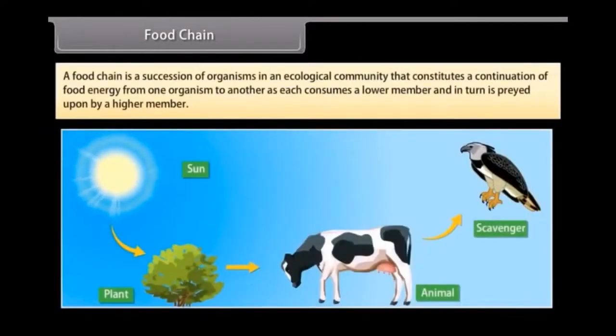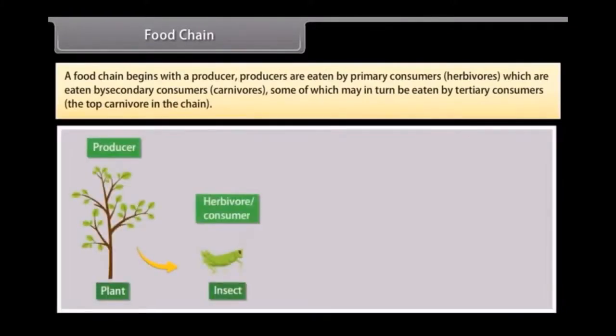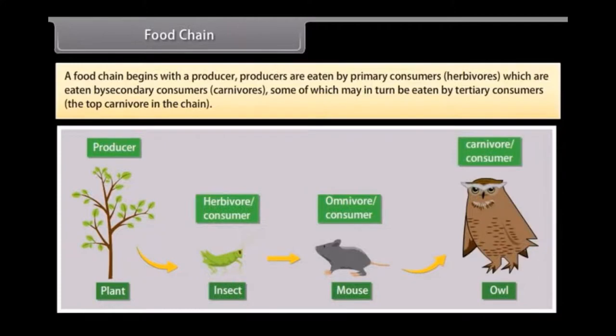Food chain. A food chain is a succession of organisms in an ecological community that constitutes a contribution of food energy from one organism to another as each consumes a lower member and in turn is preyed upon by a higher member. A food chain begins with a producer. Producers are eaten by primary consumers, herbivores, which are eaten by secondary consumers, carnivores, some of which may in turn be eaten by tertiary consumers, the top carnivore in the chain.